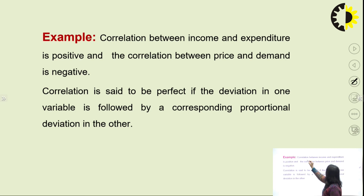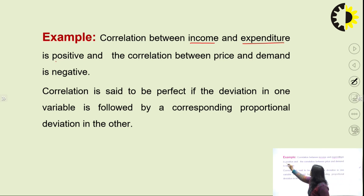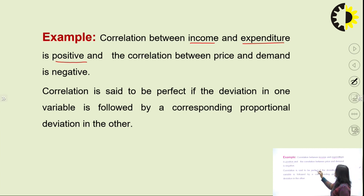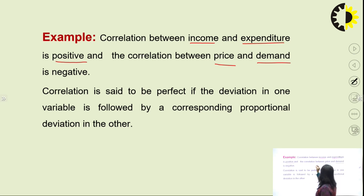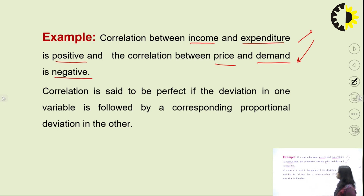For example, consider income and expenditure. If the income of an individual increases, then obviously expenditure will also increase — this is an example of positive correlation. Whereas in the case of price and demand, since they are oppositely related — if price increases, then demand will go down — that is an example of negative correlation. So correlation is both positive as well as negative.